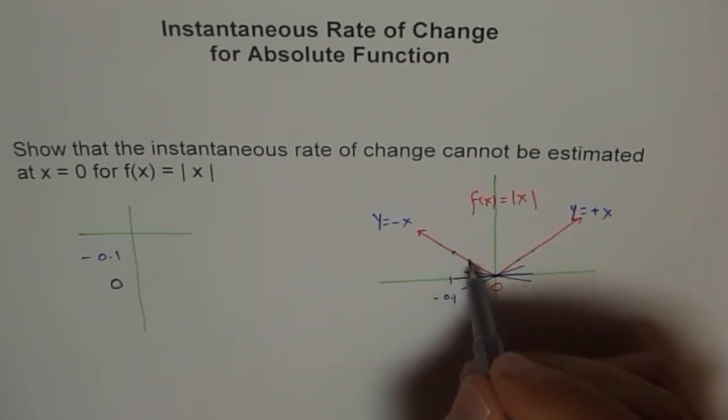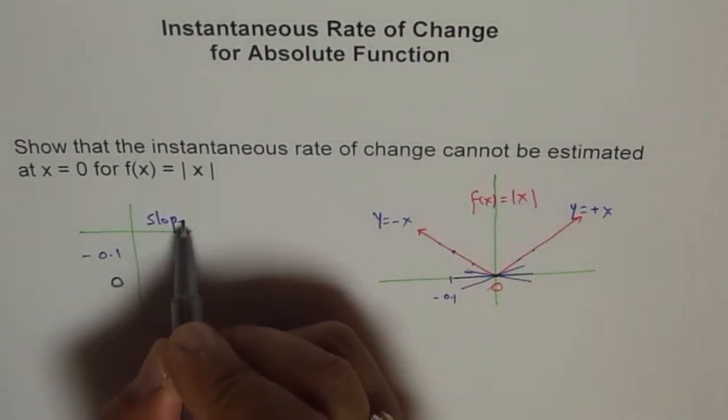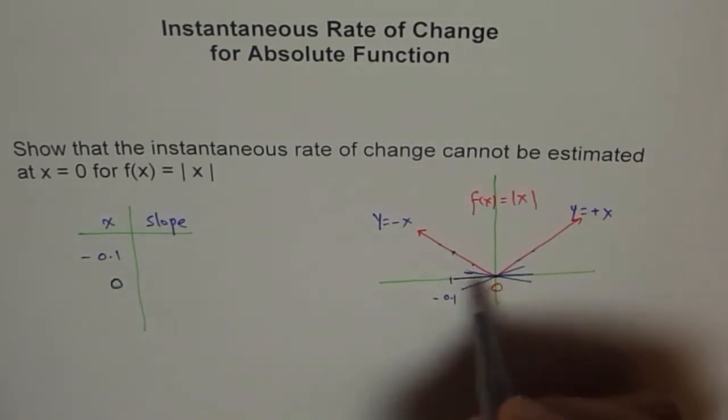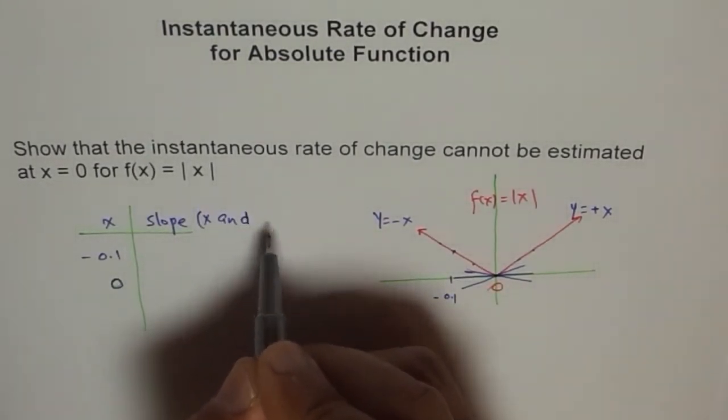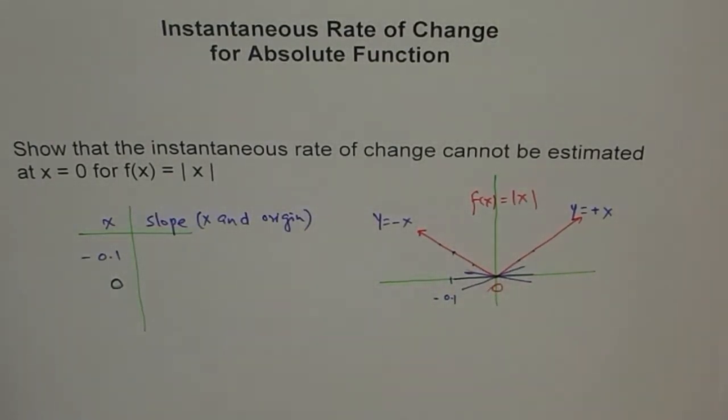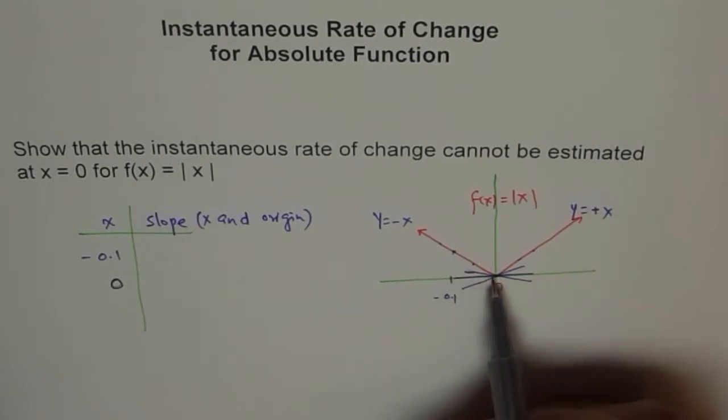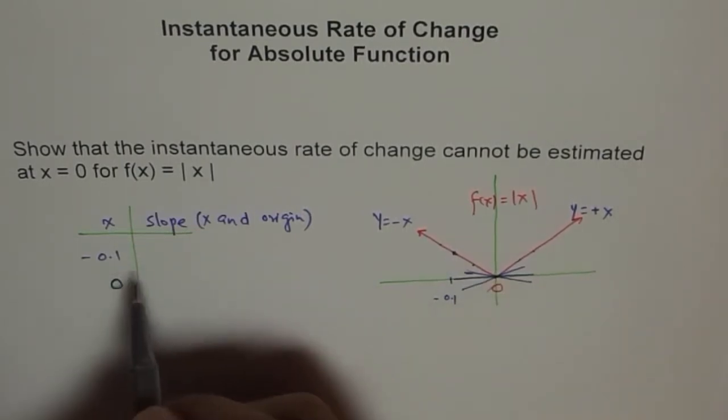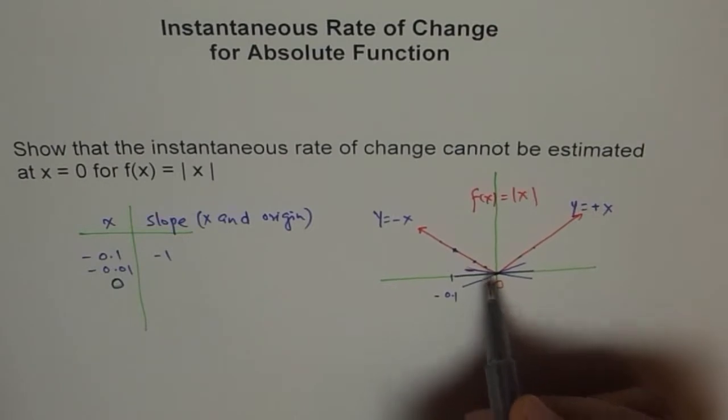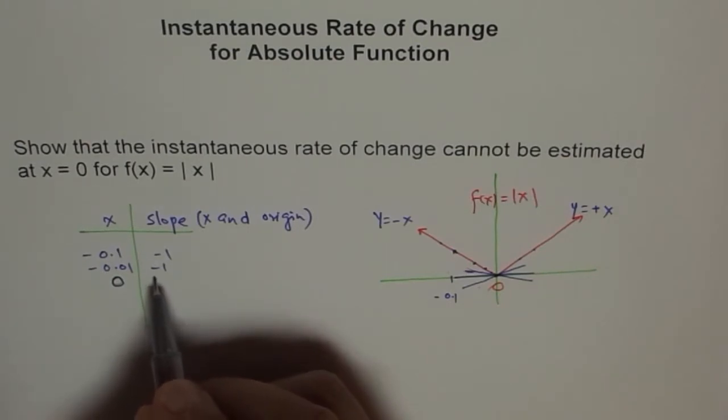So, slope of any two points on this line will always be minus 1. Here also, any two points will always be 1. Now, let us assume that this point is minus 0.1. Now, as we go closer and closer, the slope, let's say this is a slope. Let me write slope here, and these are different x values. So, slope between the x value and origin, slope between x and origin we are taking. So, we can see from here that if I consider this point and this point, the slope is minus 1.